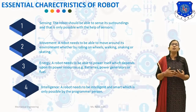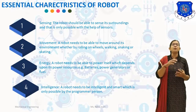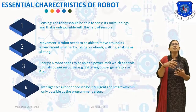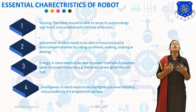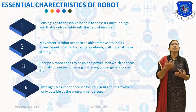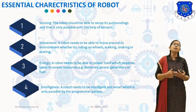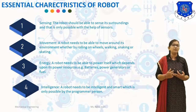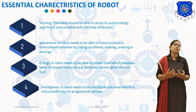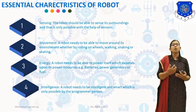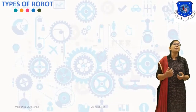The next essential characteristic is movement. A robot needs to be able to move around its environment, whether by rolling on wheels, walking, snaking, or skating. The next is energy. Robots need to be able to power themselves, which depends upon power resources like battery, power generators, or fuels. The most important characteristic of a robot is intelligence, which is only possible by the programmer. Programming is most important for the intelligence of robots.